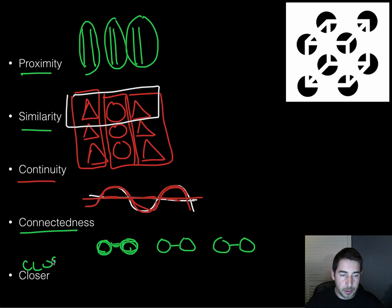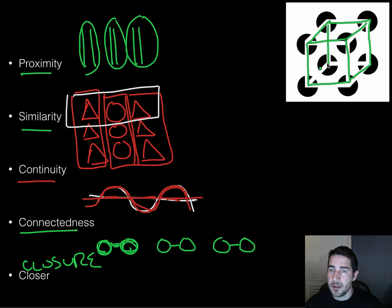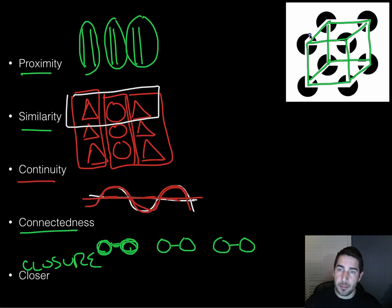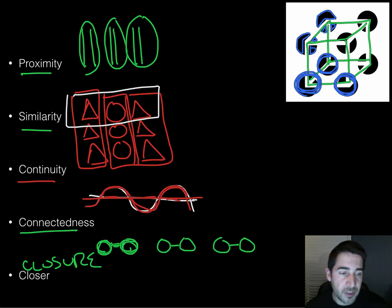Then we have closure. Closure is where we tend to fill in the gaps on things where we think there should be gaps. If you look at this picture up here, we tend to see a box — you make a box out of it if you look at it for any length of time. You see a three-dimensional box when in reality it's just a couple of weirdly shaped shapes. We tend to see the white empty spots as a box and insert things in there. That's how we group things together.